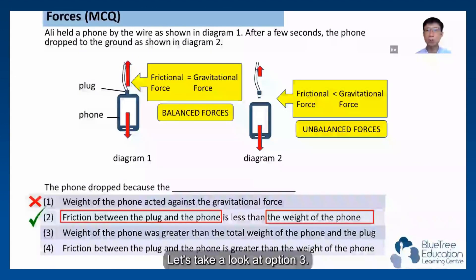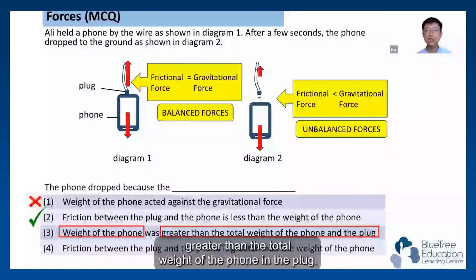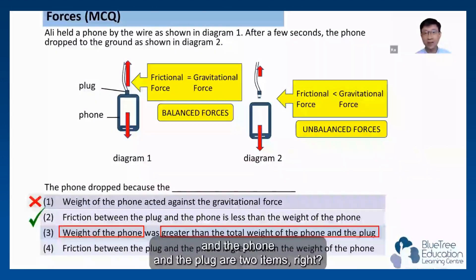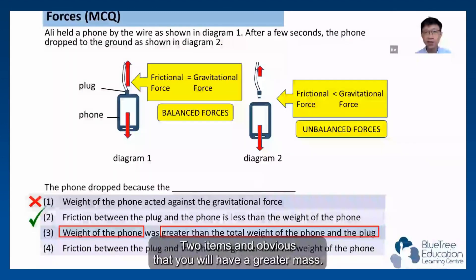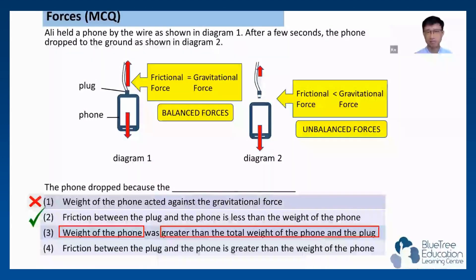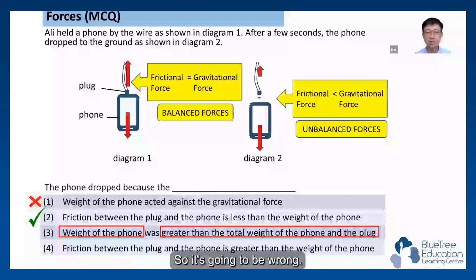Option 3: the weight of the phone is greater than the total weight of the phone and the plug. The phone is just one item, while the phone and the plug together are two items. Two items obviously have a greater mass. How can the mass of one phone be greater than the mass of the phone plus the plug? This statement does not make sense, so it is wrong.